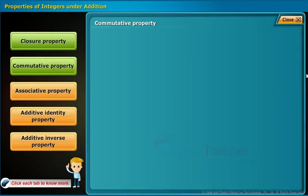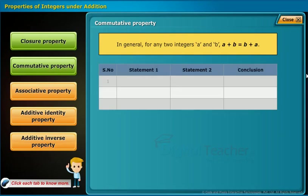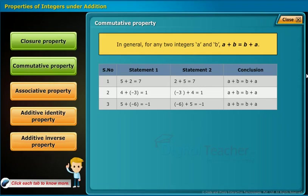Commutative property defines that for any two integers A and B, A plus B equals B plus A. For example: 5 plus 2 equals 7 and 2 plus 5 equals 7, confirming A plus B equals B plus A. The same holds for the second and third statements as shown in the table. Therefore, the table follows commutative property under addition.